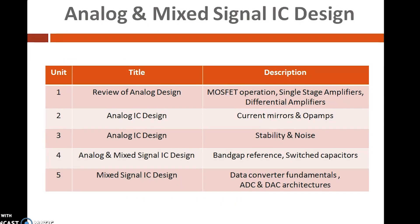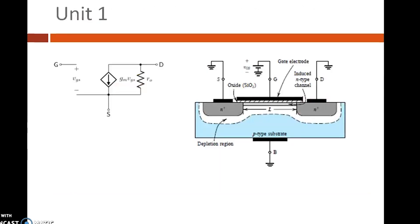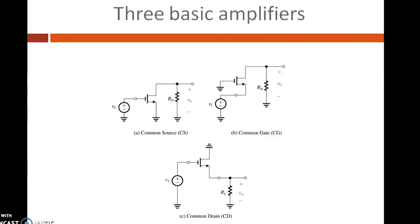The next course in the analog stream is 16EC64 Analog and Mixed Signal IC Design. This course is divided into five units covering design aspects of analog as well as mixed signal circuits. The first unit is a review of analog design, covering various models for analog design followed by single stage amplifiers. The three useful configurations of a MOSFET — common source, common drain, and common gate amplifier circuits — are discussed along with designing these amplifiers from a given set of specifications.